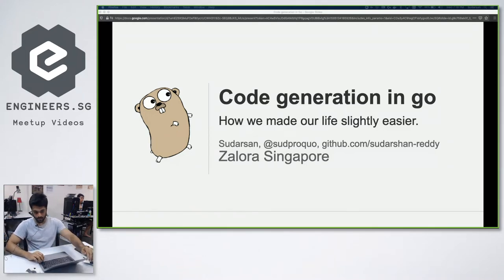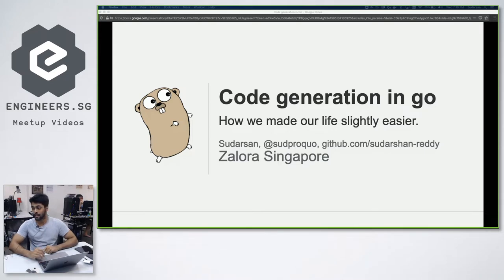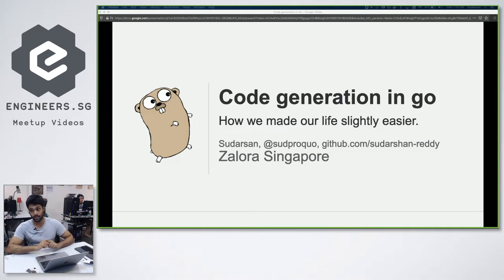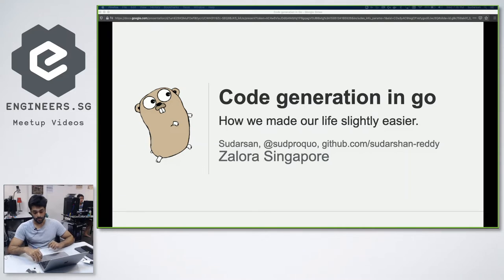Basically what I'm going to be talking about today is something that we did recently at Zalora and something that made our life slightly easier. We basically want to share how we did that in our journey and reasoning with you guys. This is what the title says: code generation in Go, and how we sort of automated some of our things to make it really cool.